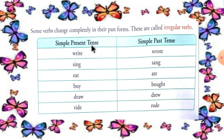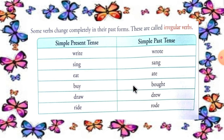Simple present tense and simple past tense irregular verbs: write — wrote, sing — sang, eat — ate, buy — bought, draw — drew, ride — rode.